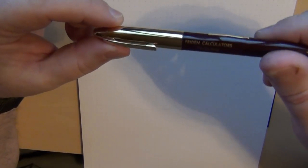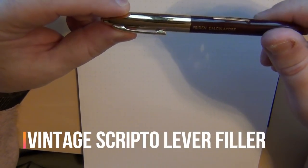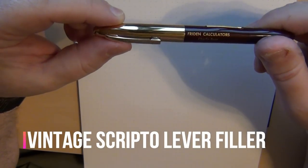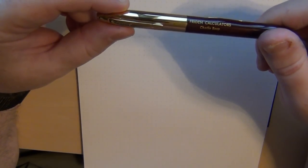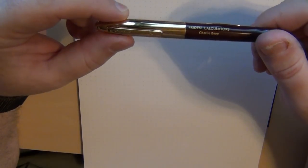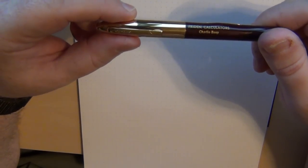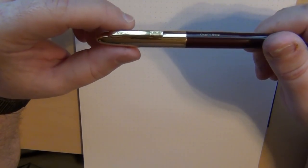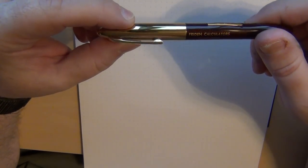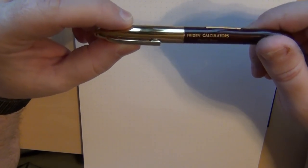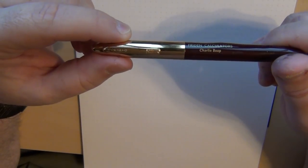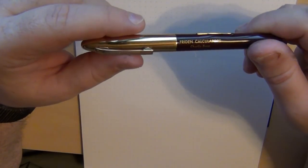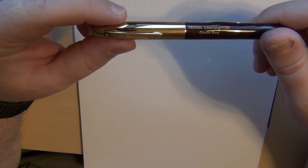So I wanted to follow up first. I shared with you the Scripto pen that I had gotten, and it is the one that has the Frieden Calculators personalization on it. It was one of those that I got from SpearBob and somebody had asked me to let you guys know how they write.